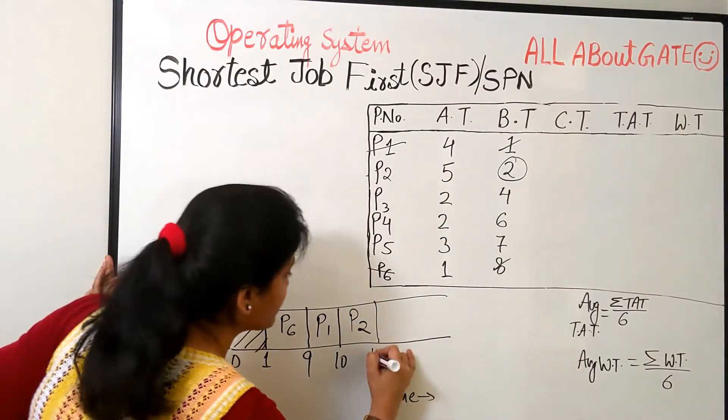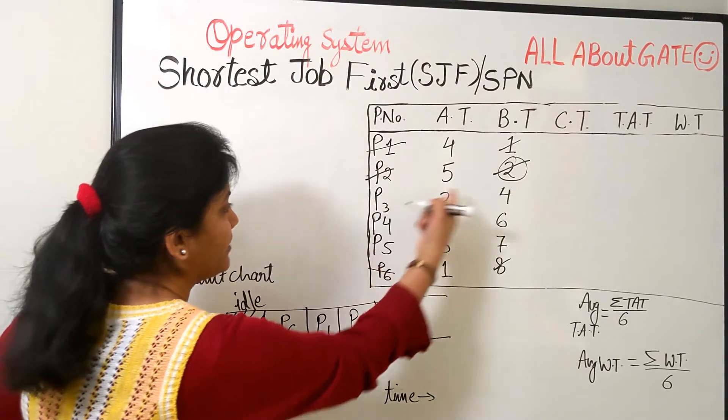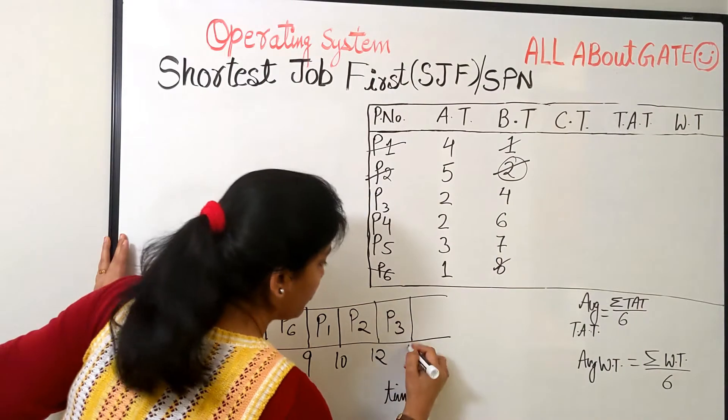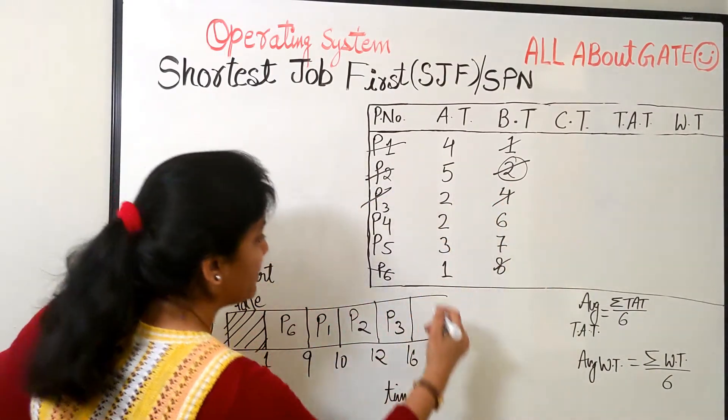2 bursts. So 10 plus 2, 12. So this is done. This is done. Next, by default is P3 because it needs only 4 bursts. So 4 bursts, 12 plus 4, 16. So this is done. This is done. Next is P4.